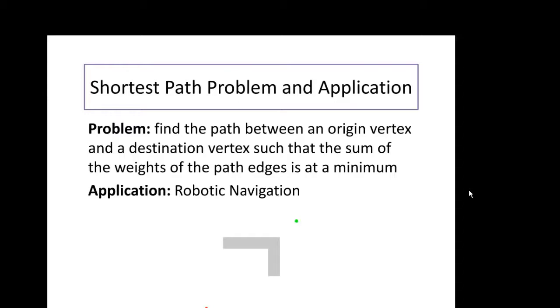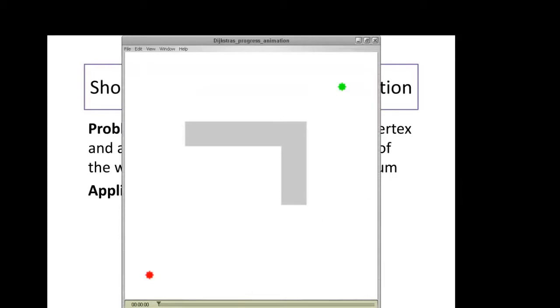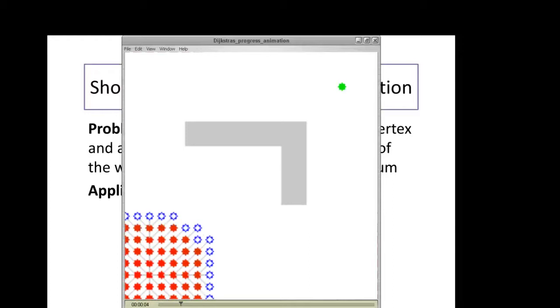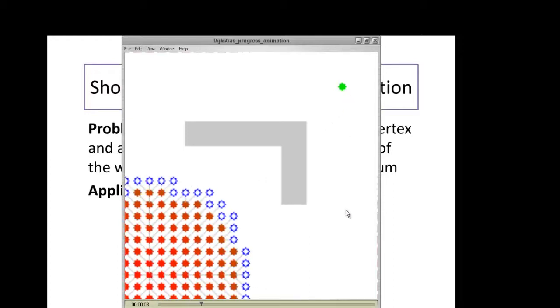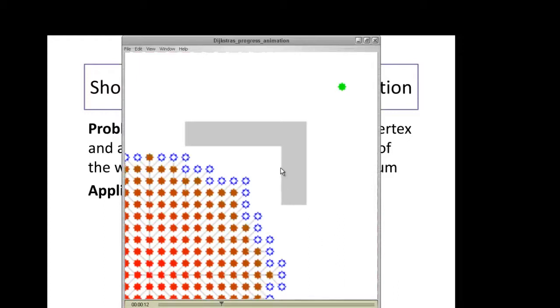There are many applications to this and the one that I like the most is robotic navigation. Here's a quick animation that I found on Wikipedia which illustrates it very nicely. If we have our origin here and our destination, we're trying to find the shortest path between the two, and there's a barrier in between.